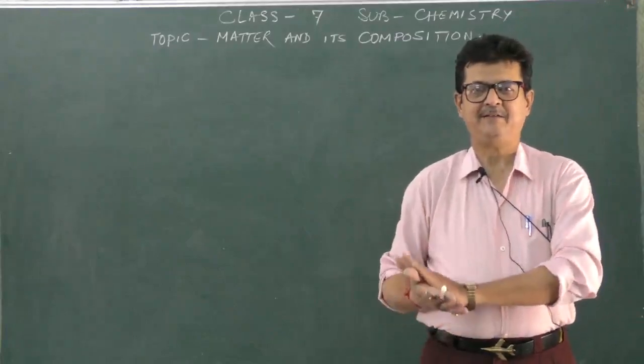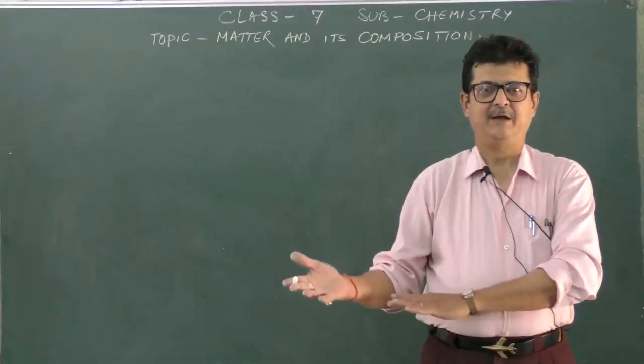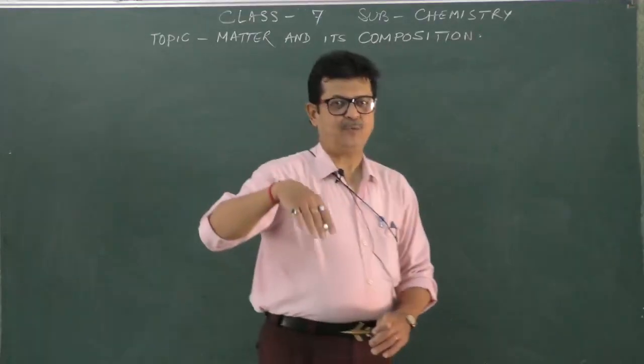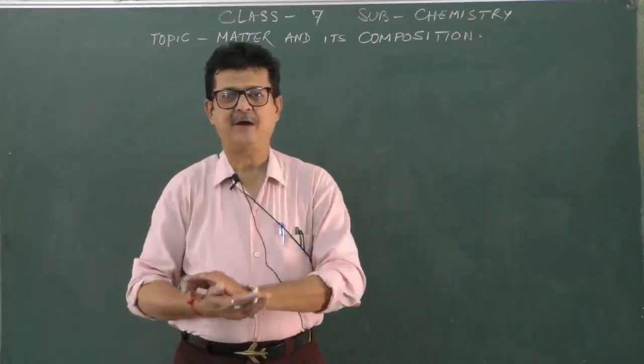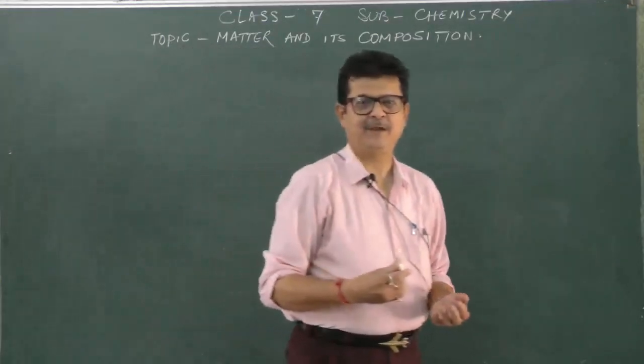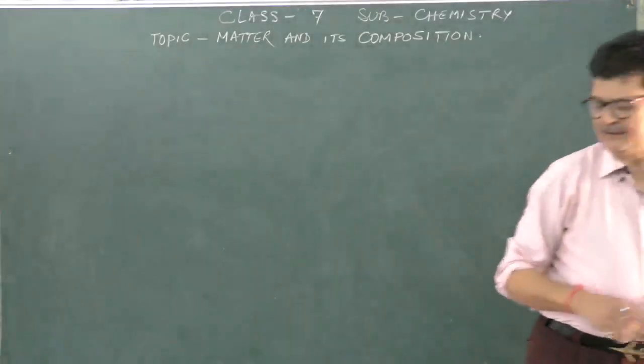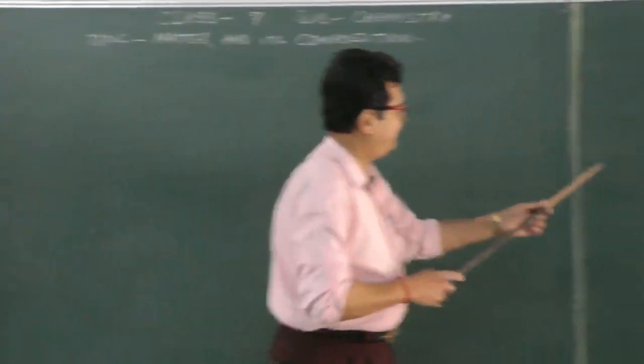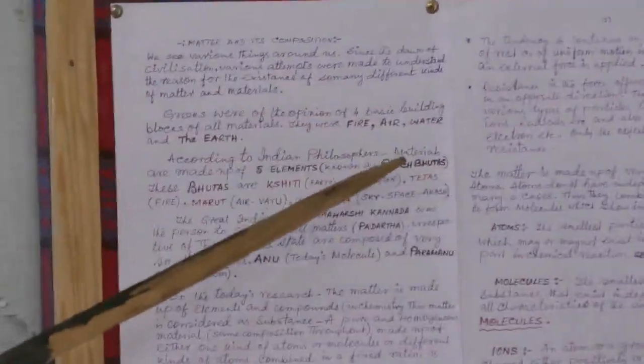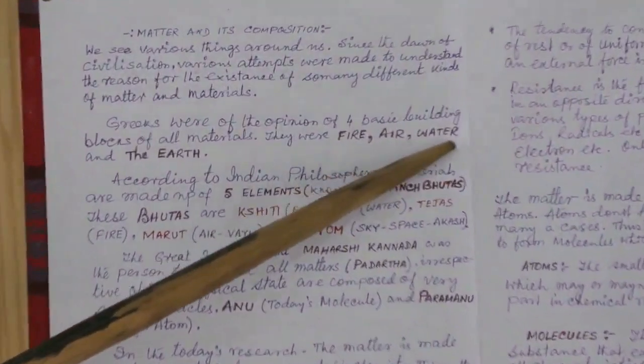In modern civilization we see these matters are made up of atoms, molecules, radicals, ions. Previously when it started, earlier Greeks used to have four elements. They had water, air, earth, and fire. These were the four elements they used to have - fire, air, water, and earth.